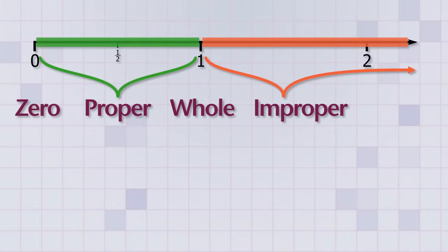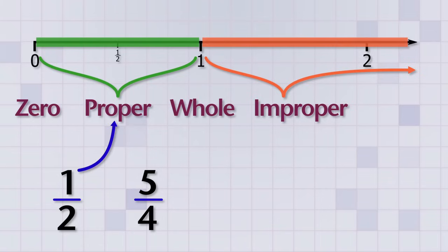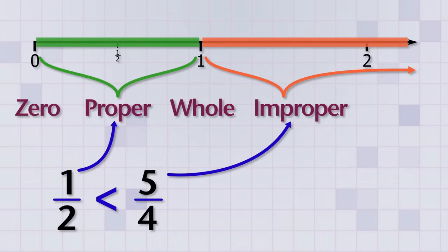And finally, what about 1 half and 5 over 4? We know that 1 half is a proper fraction, but 5 over 4 is an improper fraction because its top number is bigger than its bottom number. So that means that 1 half is less than 5 over 4.